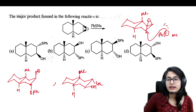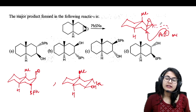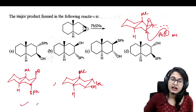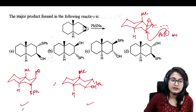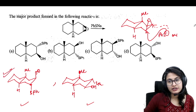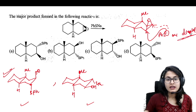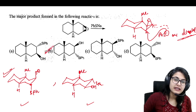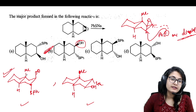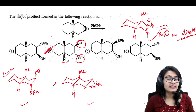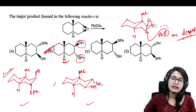When the sulfide attacks this carbon it is an axial attack; when it attacks on the other carbon it is an equatorial attack. The diaxial attack is more favored. According to that, the OH is on the same side as the methyl, and SPh is on the same side as the proton — so this is your correct answer, option B.